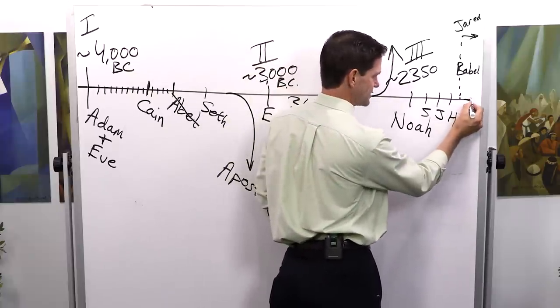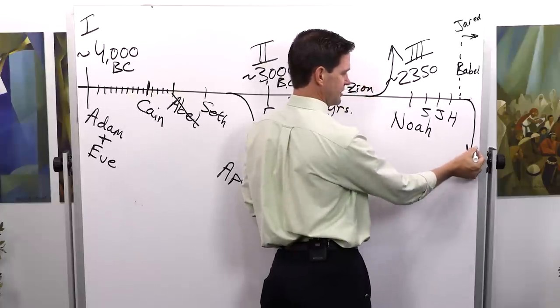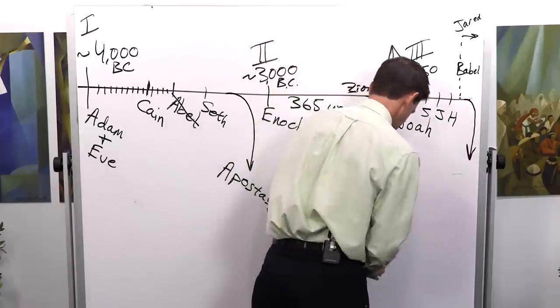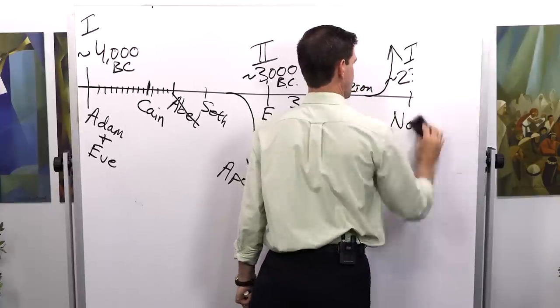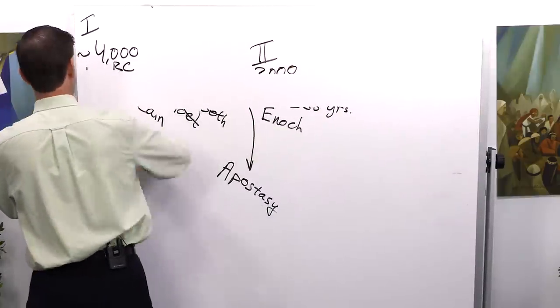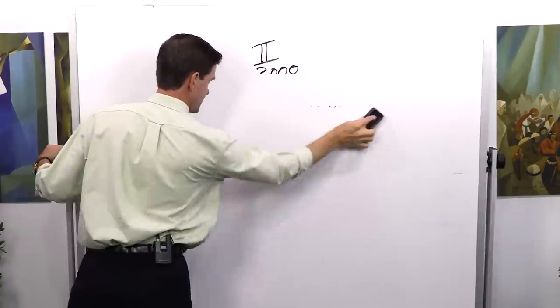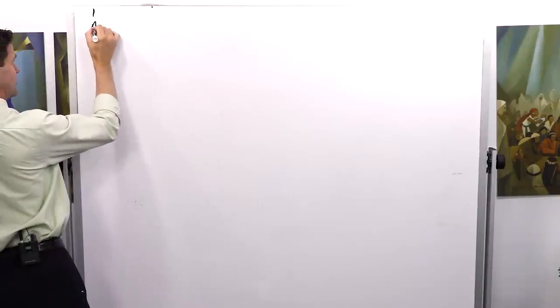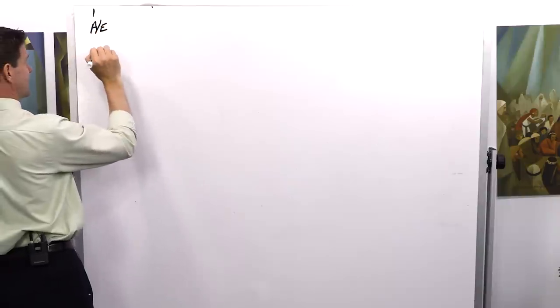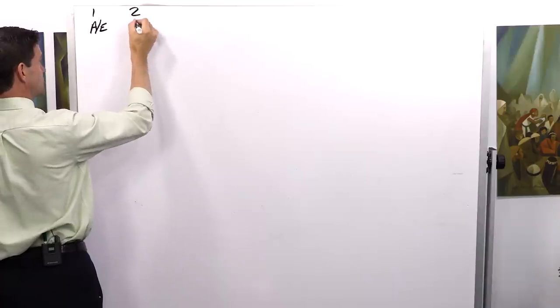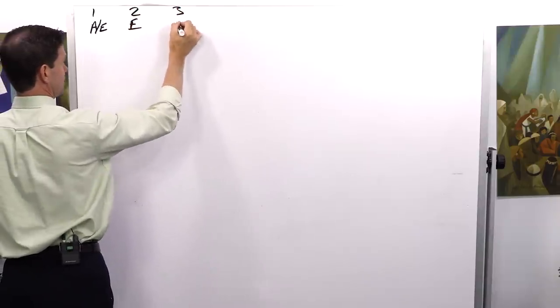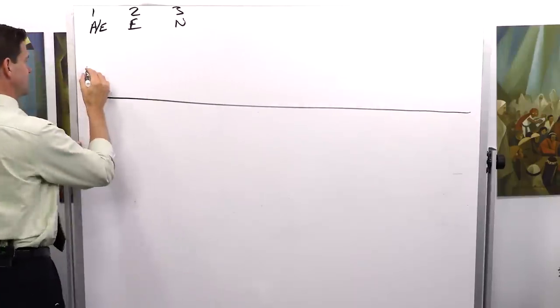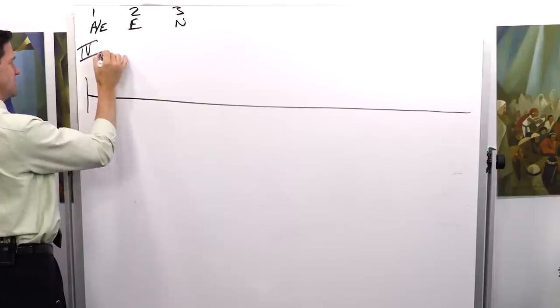It doesn't take long in this dispensation before we have an apostasy, especially with things happening around the Tower of Babel. So the need arises to open a new dispensation, call a new prophet to stand at the head of that dispensation. So let's just review here. Number one, Adam and Eve. Number two, Enoch. Number three, Noah. Now we go to number four.